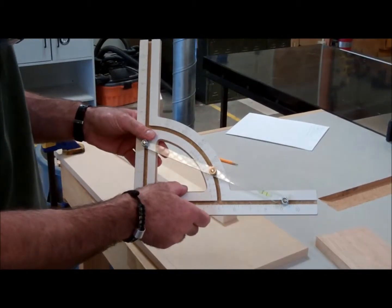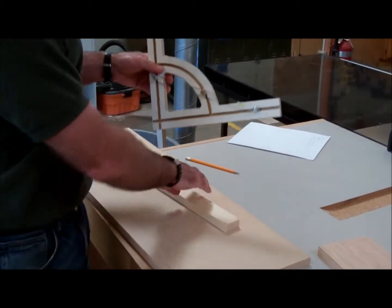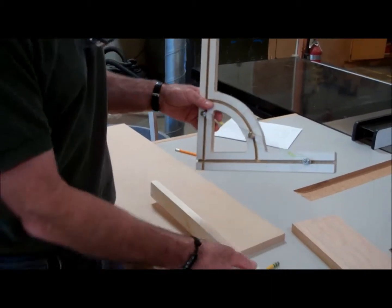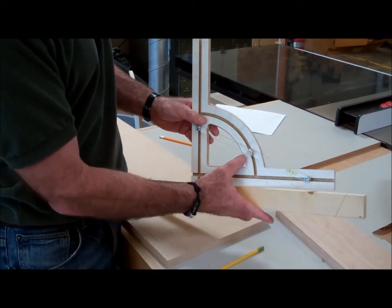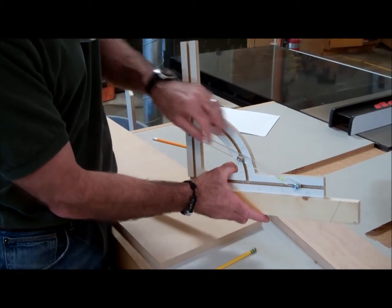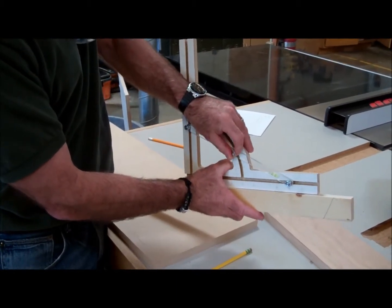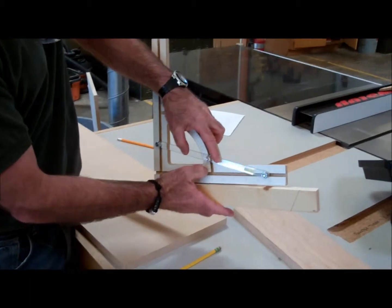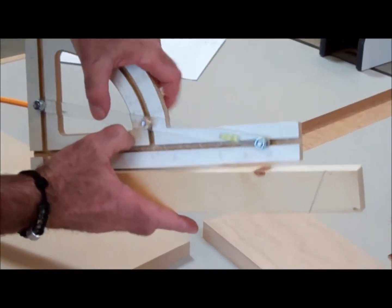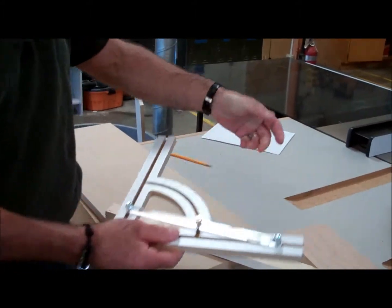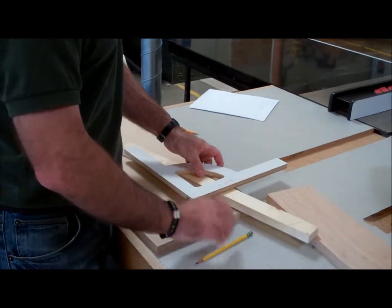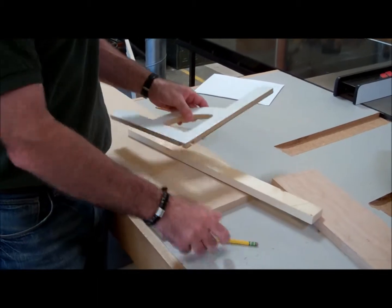Another really cool feature on here is the angle level. So if I have a given slope and I want to find its angle, I could just hold this up to it. Wherever that bubble goes into level, that's my given angle. So that's at 11 degrees. And I could copy that and cut all my boards accordingly that way.